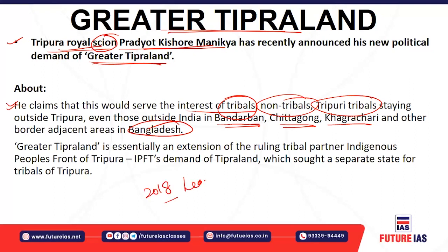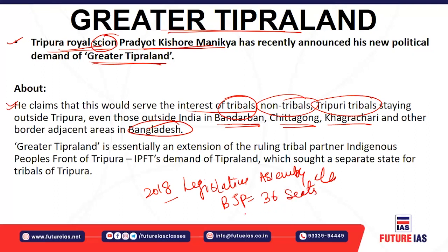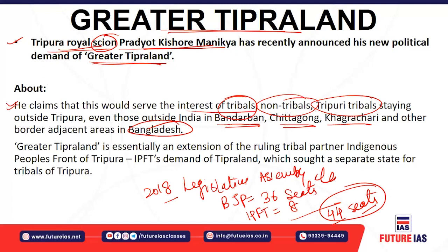In the 2018 Tripura Legislative Assembly elections, BJP won 36 seats and IPFT won 8 seats, forming a coalition government with 44 seats total. Out of nine seats contested, IPFT won eight. The demand for Tipara Land is about recognizing the needs of tribals, but it should not have secessionistic tendencies or demand independence from India.